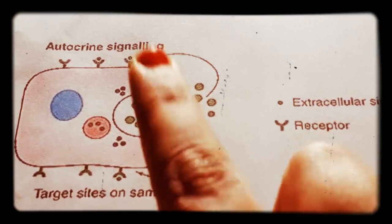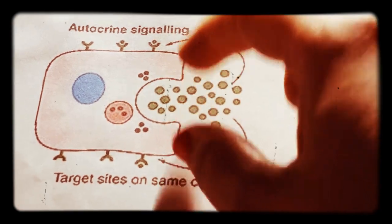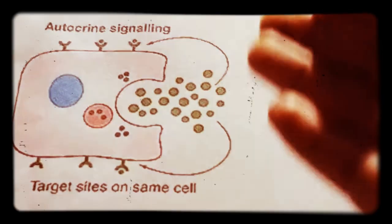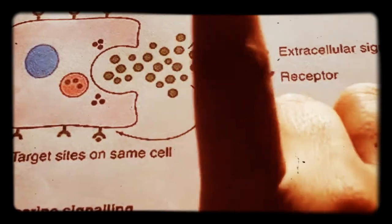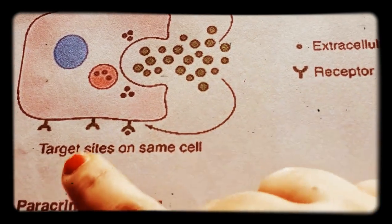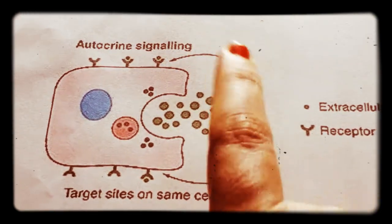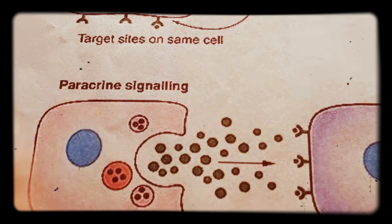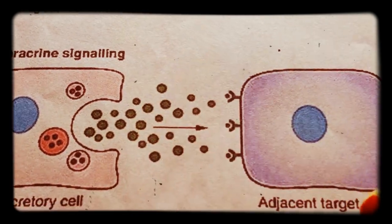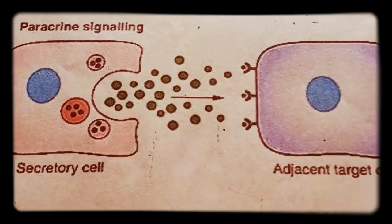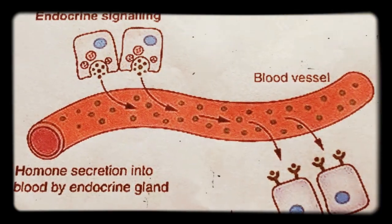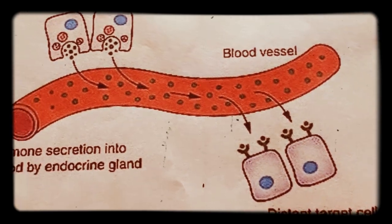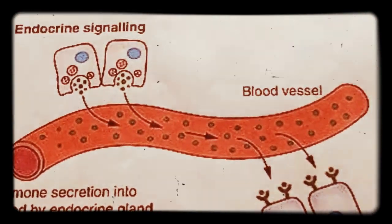We have seen autocrine, paracrine, and endocrine signaling. In autocrine signaling, secretions act on the same cell that produced them — the receptors are on the same cell, as shown by the green Y-shaped receptor acting on itself. In paracrine signaling, secretions target adjacent cells nearby. In endocrine signaling, secretions enter the blood and act on distant target cells.